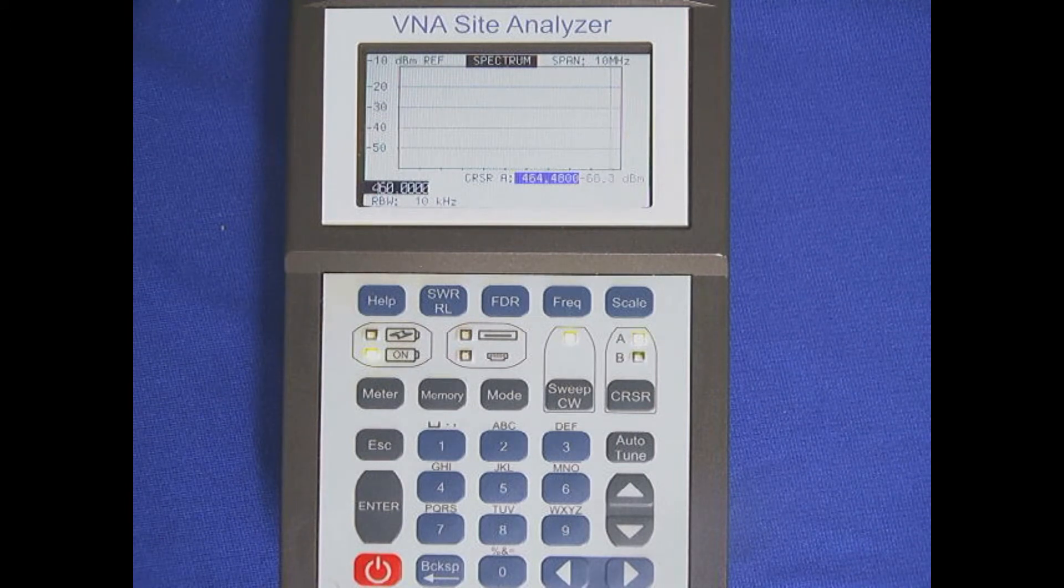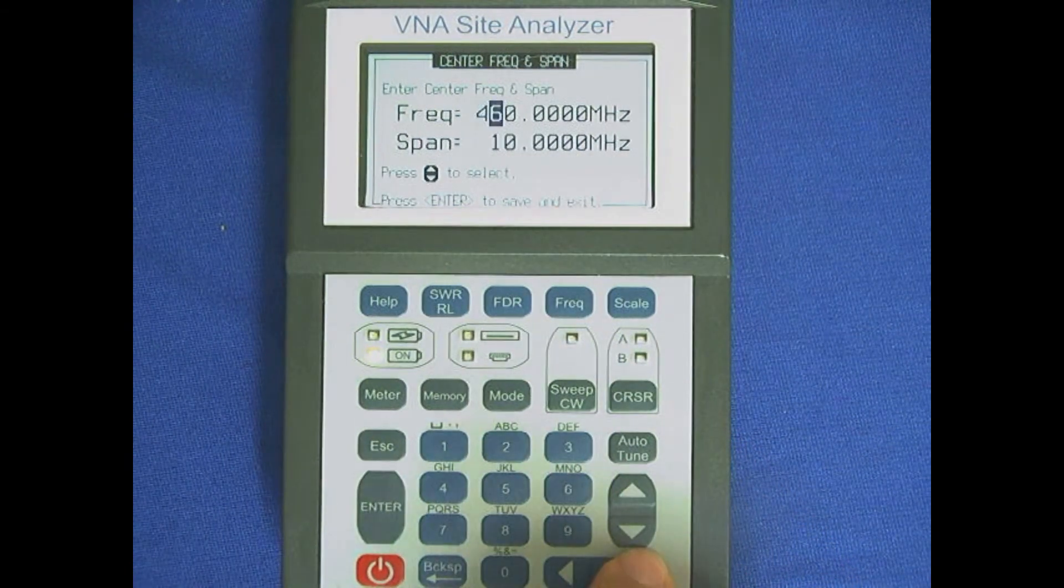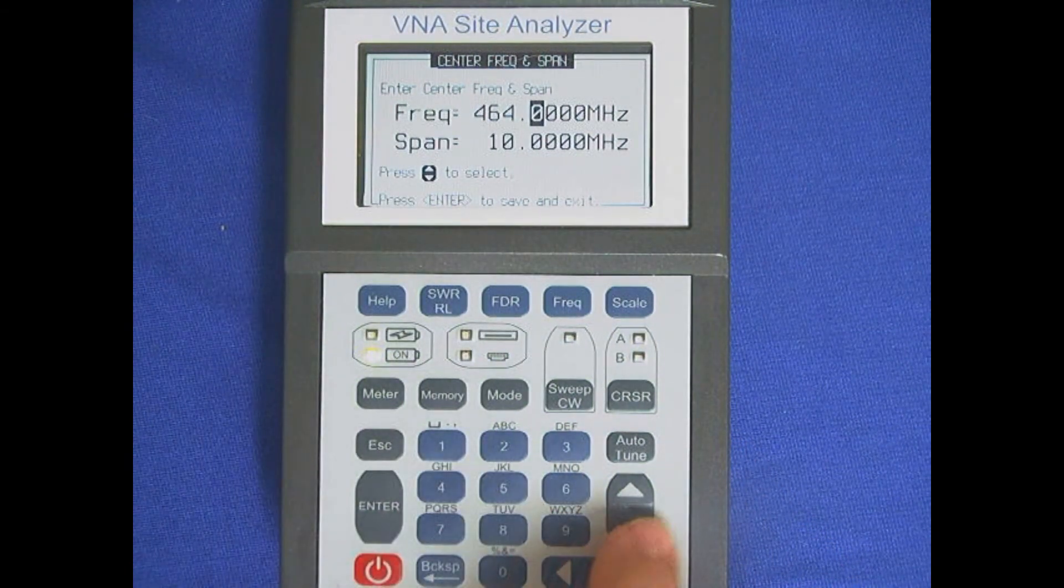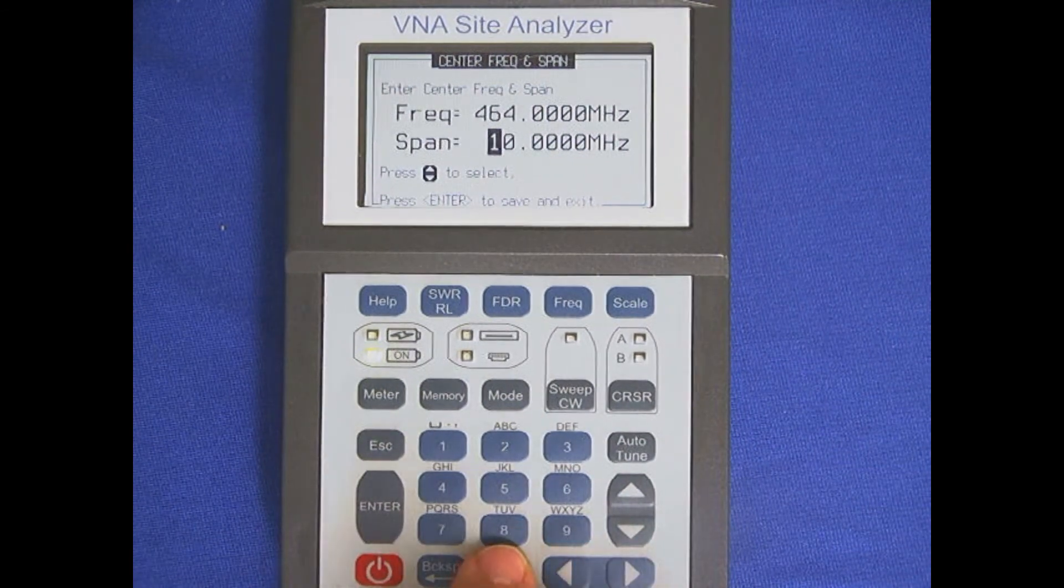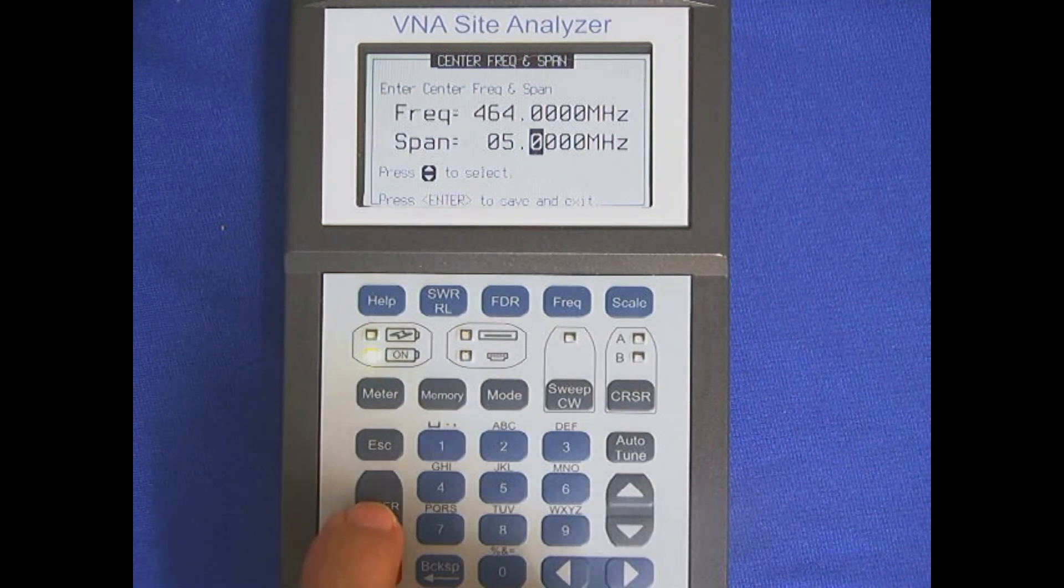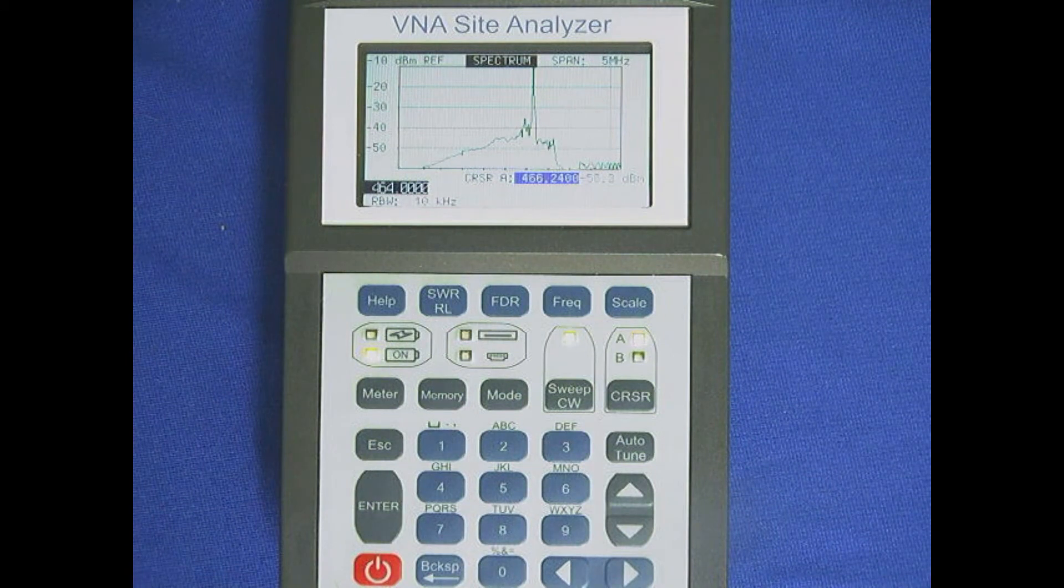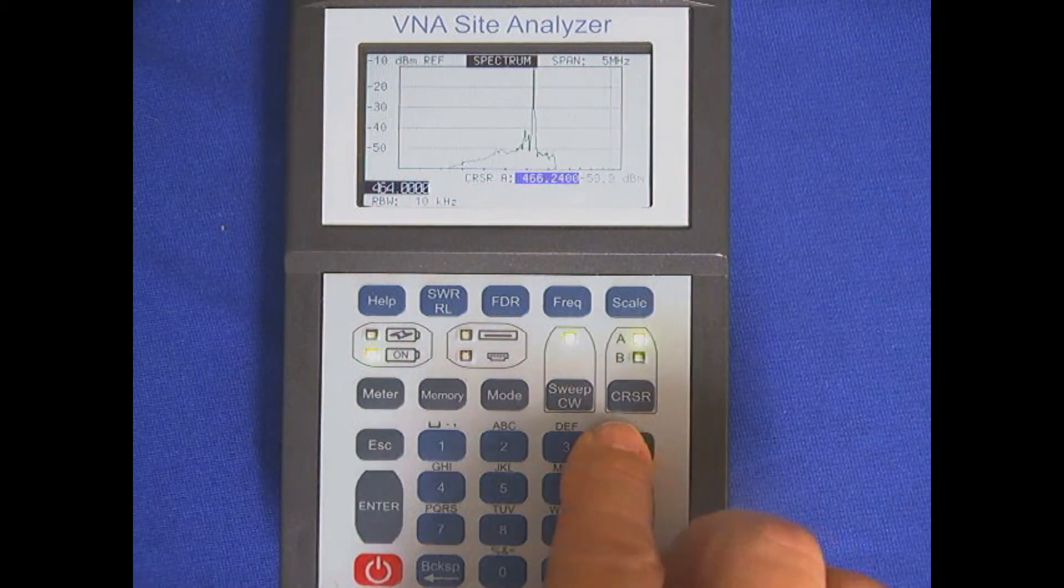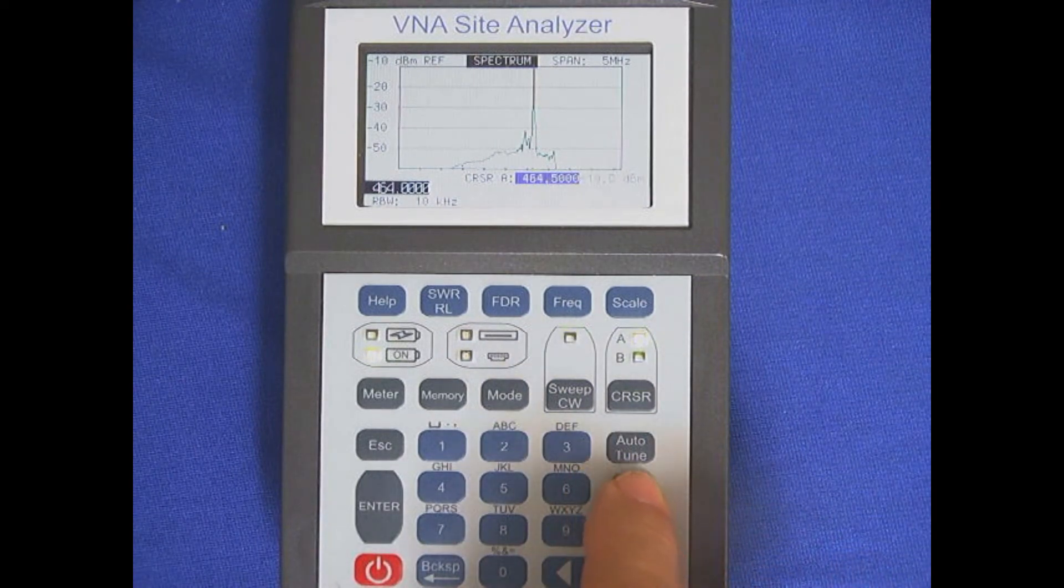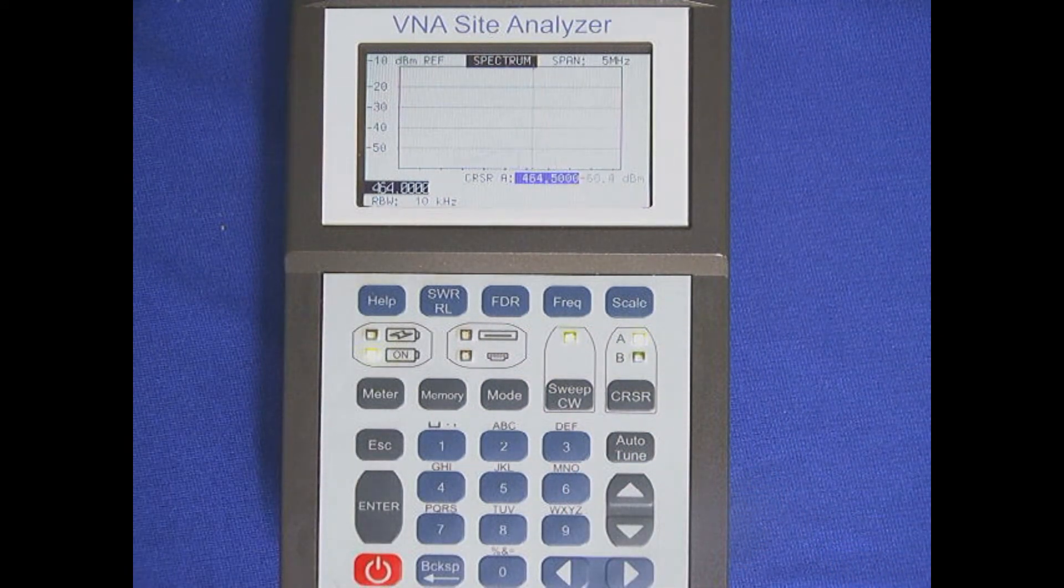So let's move this frequency over to 464 and we'll bring the spread down again. Let's make it 5 megs wide. Hit Enter. Now we've got a pretty good signal, actually going off of the display at the top for total signal level. Again, hit Auto-Tune. And it takes us to 464,500. So that's how you would do it.